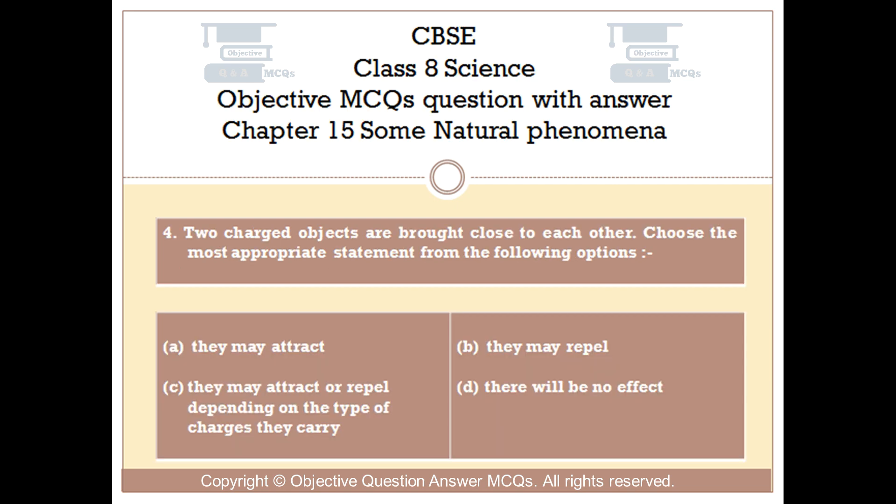Question number 4. Two charged objects are brought close to each other. Choose the most appropriate statement from the following options. Option A, They may attract. Option B, They may repel. Option C, They may attract or repel depending on the type of charges they carry. Option D, There will be no effect.